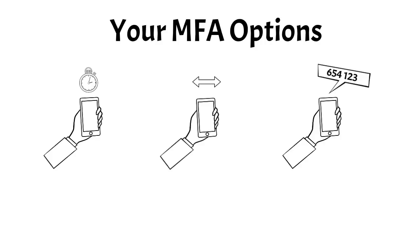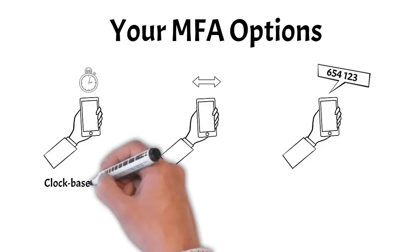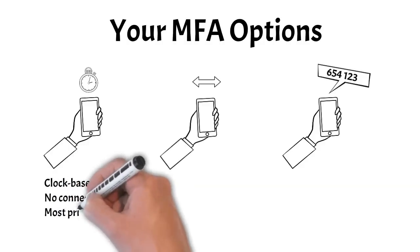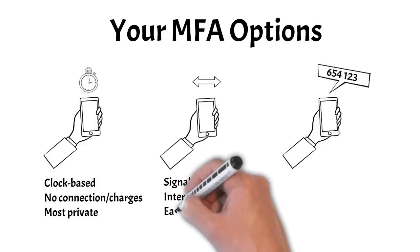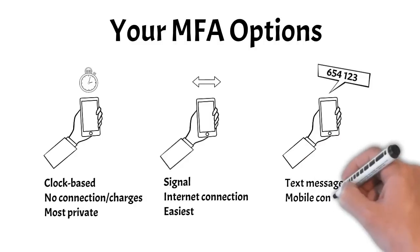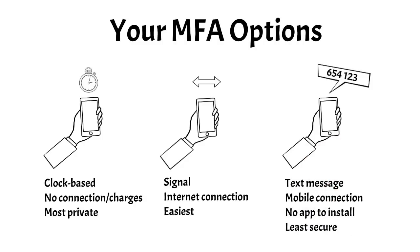Your most common options for multi-factor authentication are an app that generates a clock-based code, optional push authentication, and SMS or text. For those interested in privacy and not wanting to connect their personal phone to work, the app with a clock-based code is the perfect option, and it can be used for all your online accounts, not just for your work accounts.